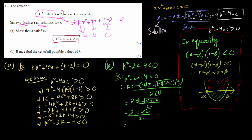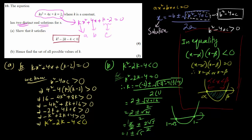Simplifying: 2 divided by 2 is 1, and square root of 20 equals square root of 4 times 5, so that is 2 root 5. So 2 root 5 divided by 2 gives root 5. Therefore k equals 1 plus or minus square root of 5. The two critical values are 1 minus square root of 5 and 1 plus square root of 5. Since we need the region less than 0, the answer in inequality format is: k is between 1 minus square root of 5 and 1 plus square root of 5.